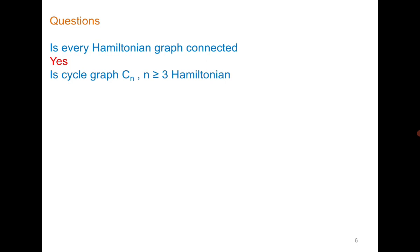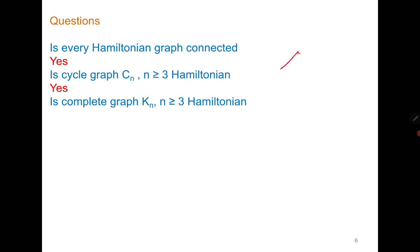The next one is: is a cycle graph Hamiltonian? Yes, all cycle graphs are Hamiltonian because they themselves are the Hamiltonian cycles. The next one is: is the complete graph Hamiltonian? Recall that in a complete graph each vertex is adjacent to all other vertices — this is K5. You can see that it always has a Hamiltonian cycle, so it is Hamiltonian.